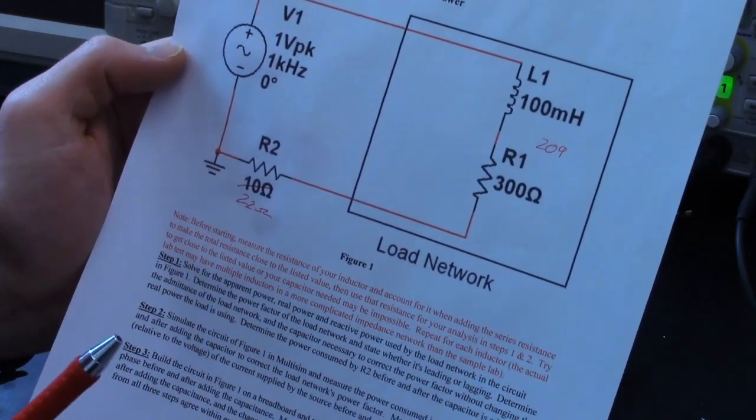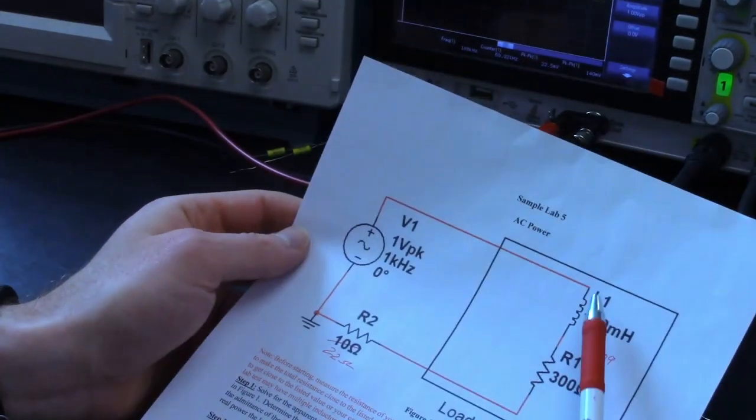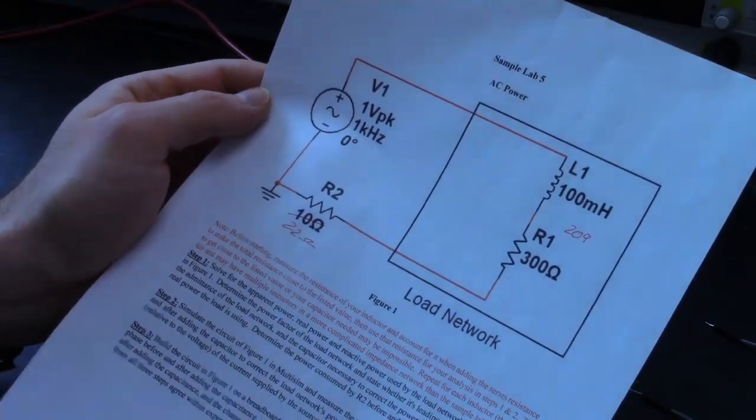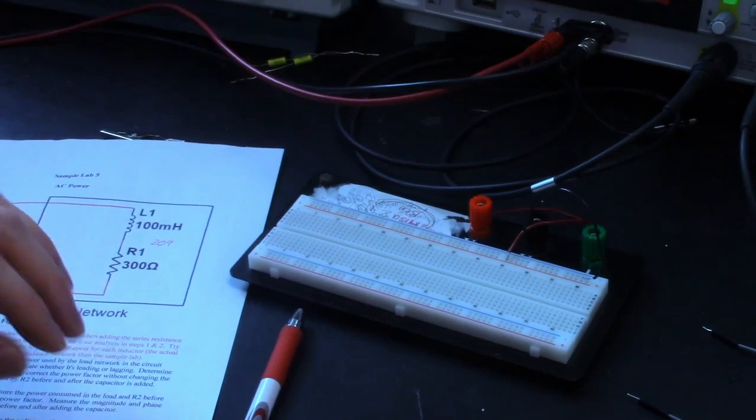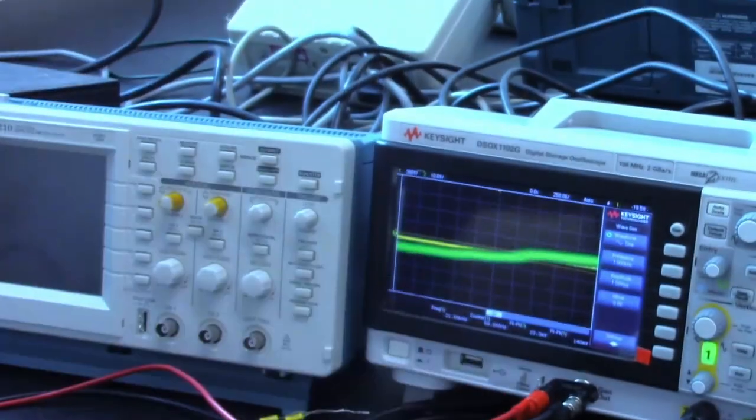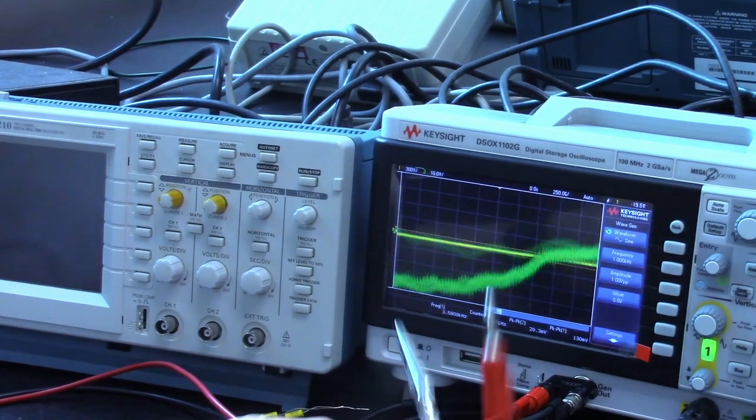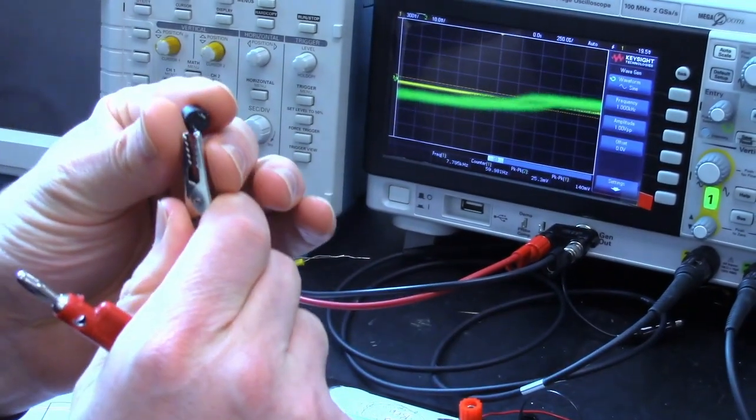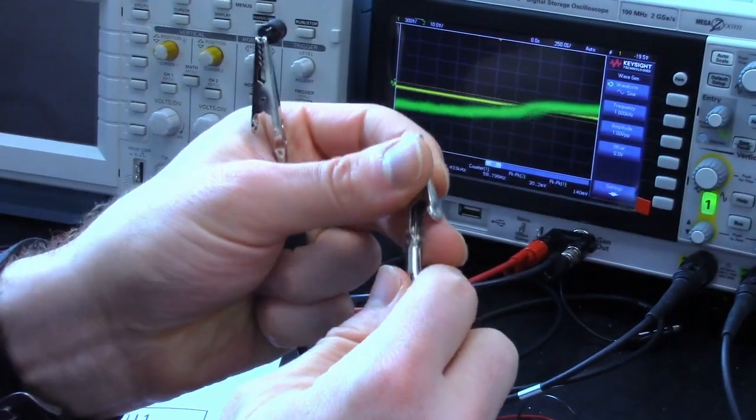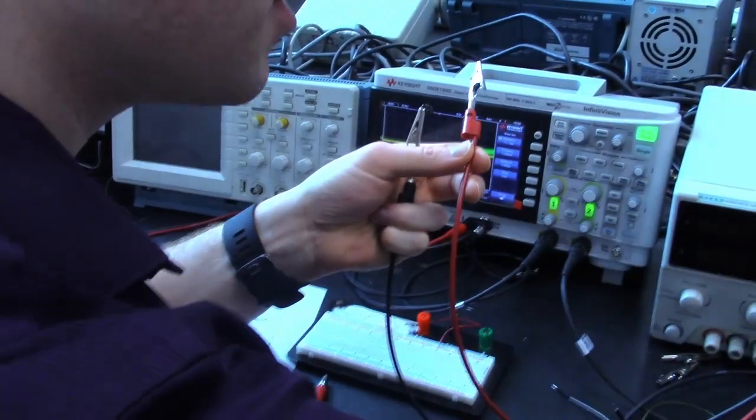We'll explain all of that as we go along. The first thing we need to do is account for the fact that the inductor doesn't actually have just inductance, it also has resistance. So what we need to do is take our inductor here and then figure out how much resistance it has by hooking that up to our ohmmeter.